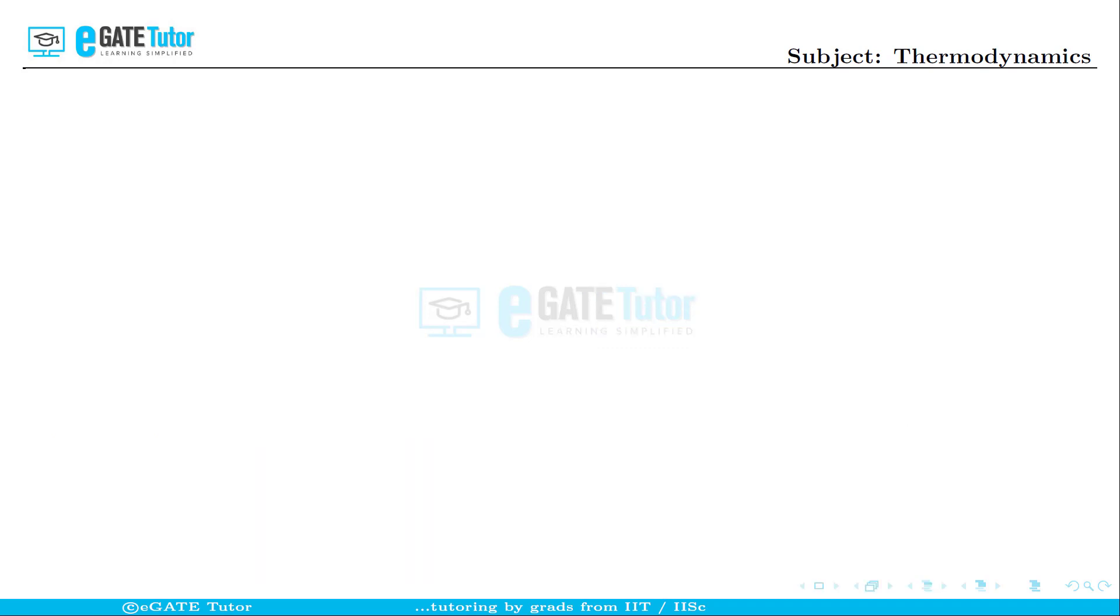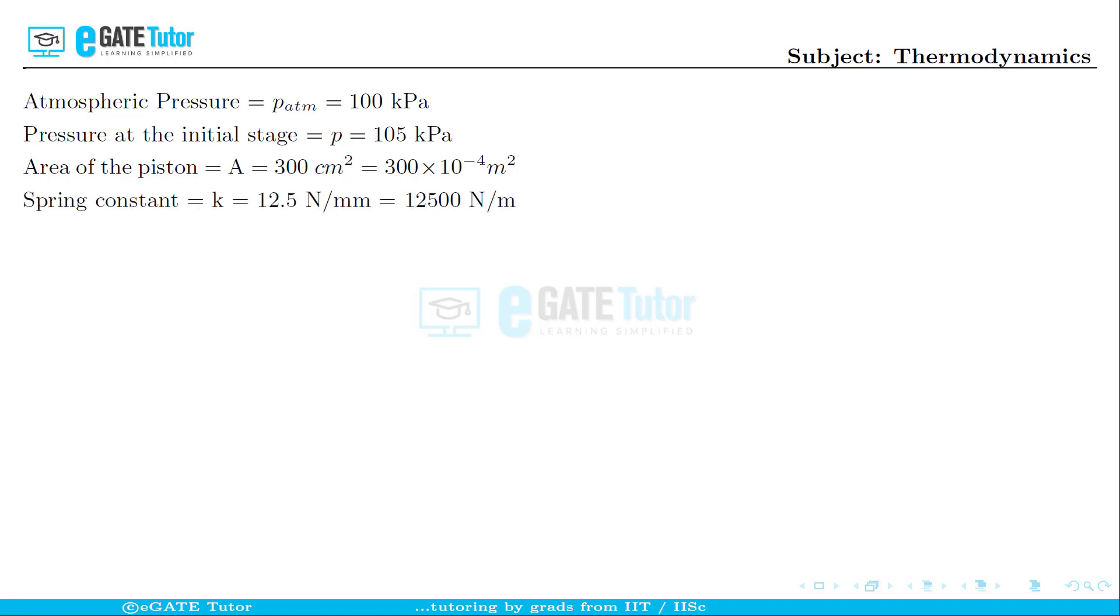It is given that the atmospheric pressure is 100 kilopascals. The pressure at the initial stage of air is given as 105 kilopascals. Area of the piston is given as A = 300 cm² = 300 × 10⁻⁴ m². Spring constant is also given as k = 12.5 N/mm = 12,500 N/m.